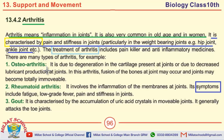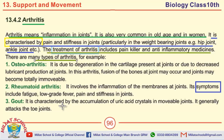The treatment of arthritis includes pain killers and anti-inflammatory medicines. These are the basic treatments of arthritis. There are basically three types of arthritis: number one is osteoarthritis, number two is rheumatoid arthritis, and number three is gout. These are the basic three types of arthritis.